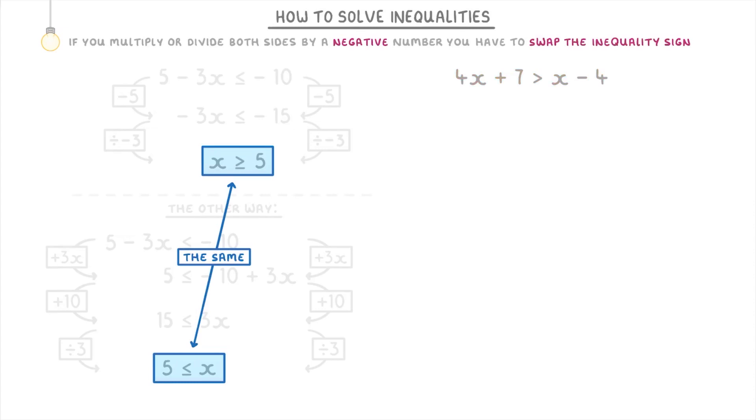For the second question, there are also two ways of doing it because we could try to put the x's on the left or the right. But because at the moment there are more x's on the left-hand side, it'll be better to keep our x's on the left and put our numbers on the right.